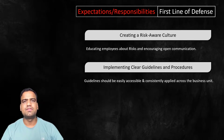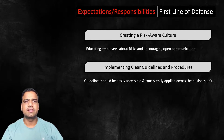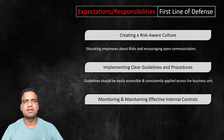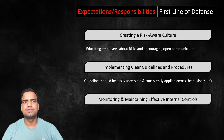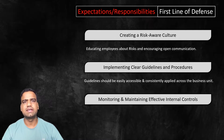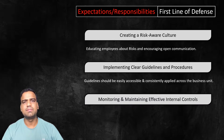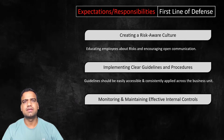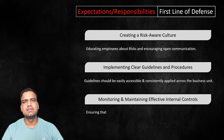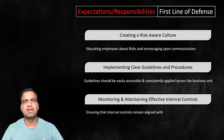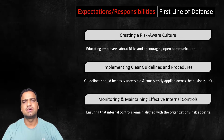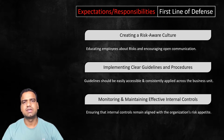The first line of defense is also expected to monitor and maintain effective internal controls. This includes identifying potential weaknesses, implementing corrective actions, and ensuring that internal controls remain aligned with the organization's objectives.